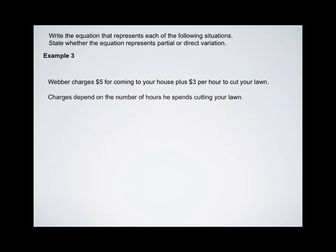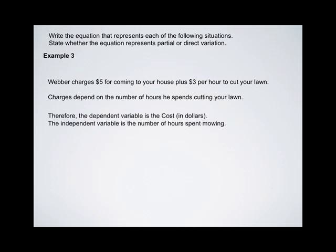Here, the cost depends on the number of hours he spends cutting your lawn. Therefore, the dependent variable is the cost in dollars, and the independent variable is the number of hours spent mowing. Let H represent the number of hours spent mowing, and let C represent the cost in dollars.